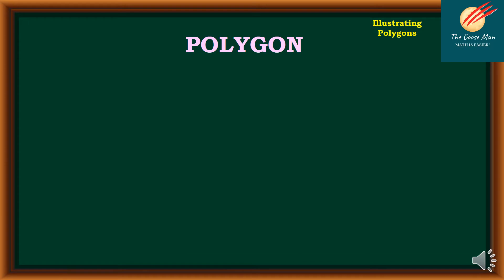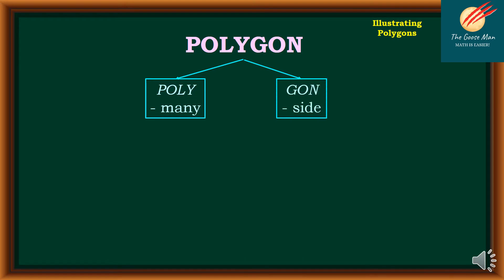Polygons comes from the Greek word poly, which means many, while gon, which means side. So if we put them together, polygon literally means many sides.